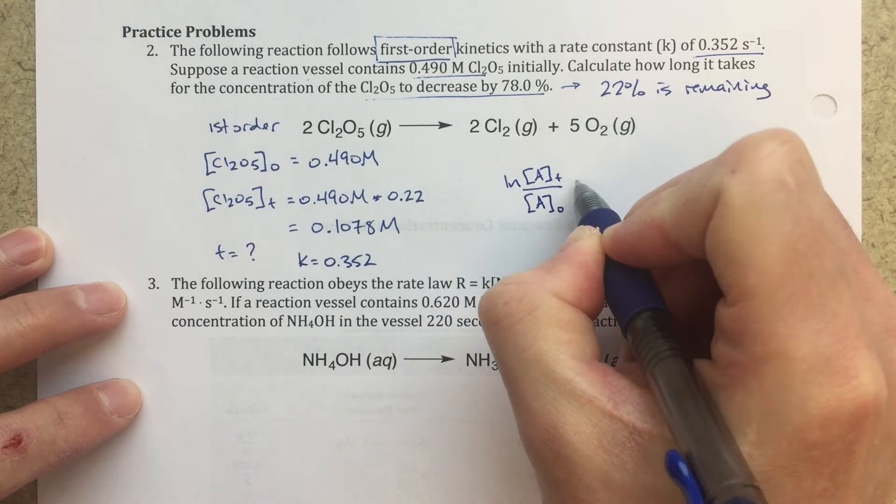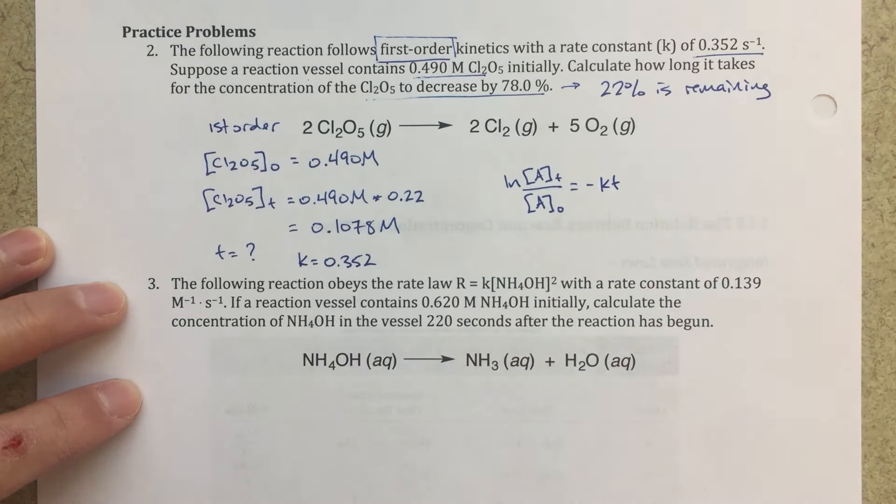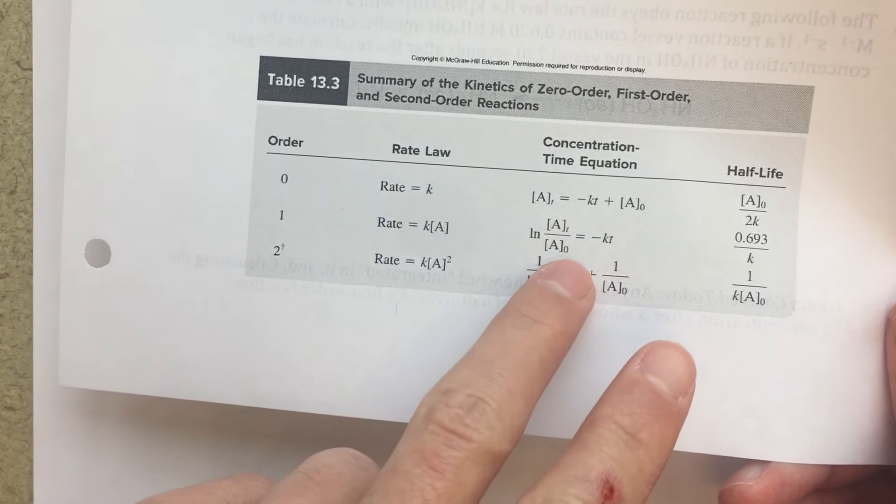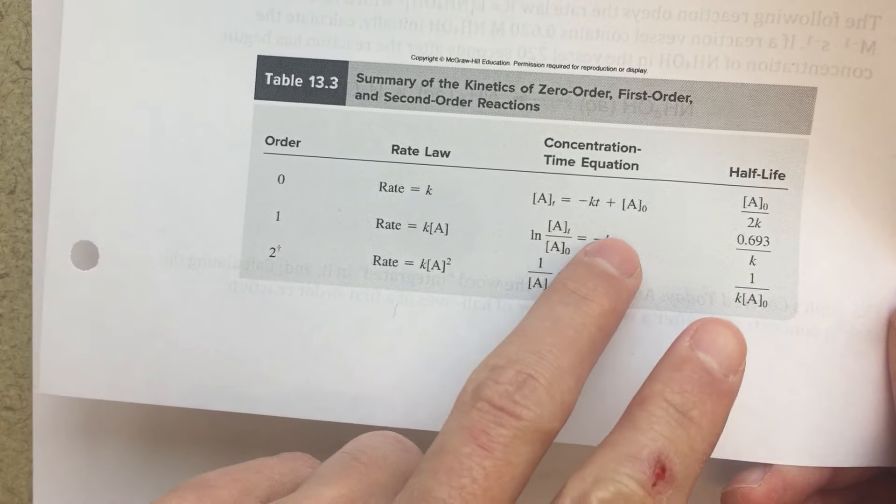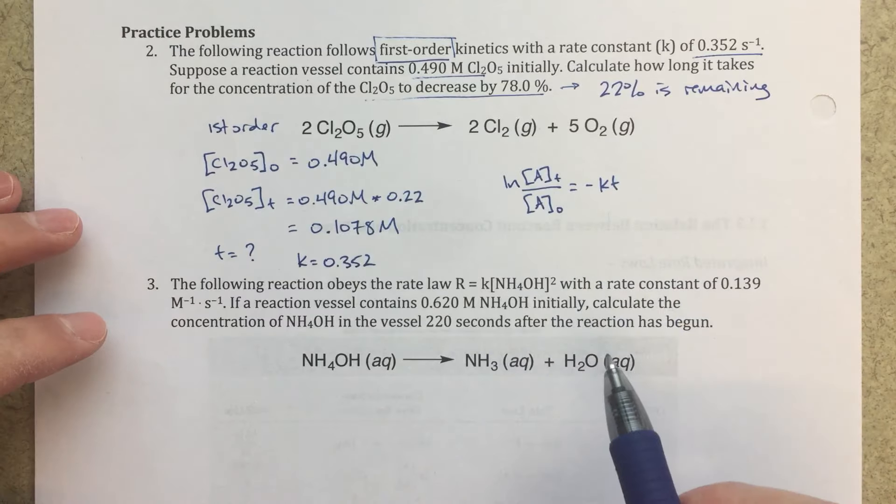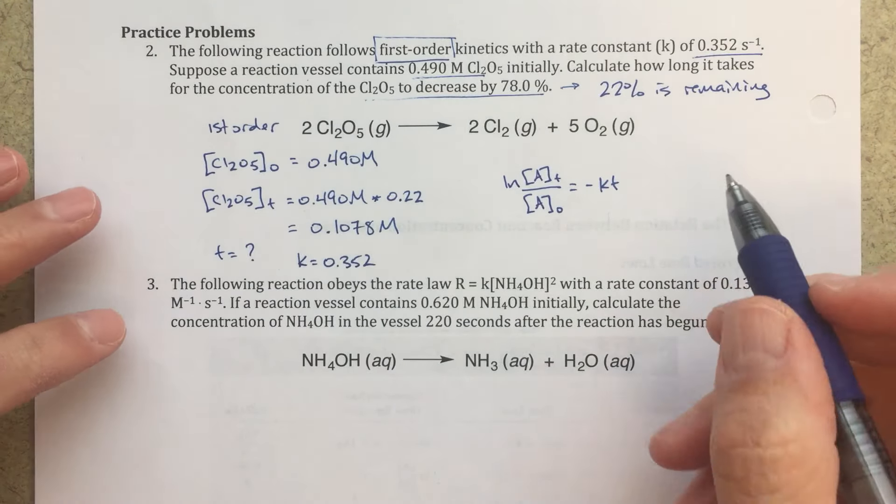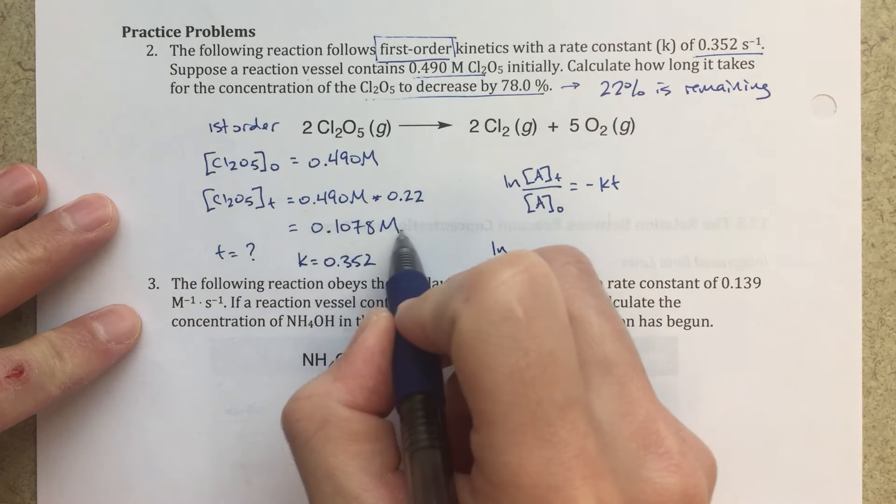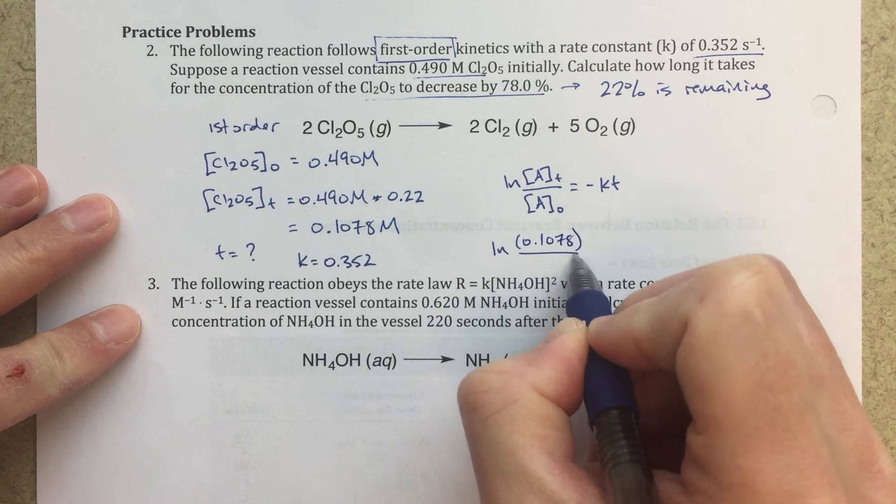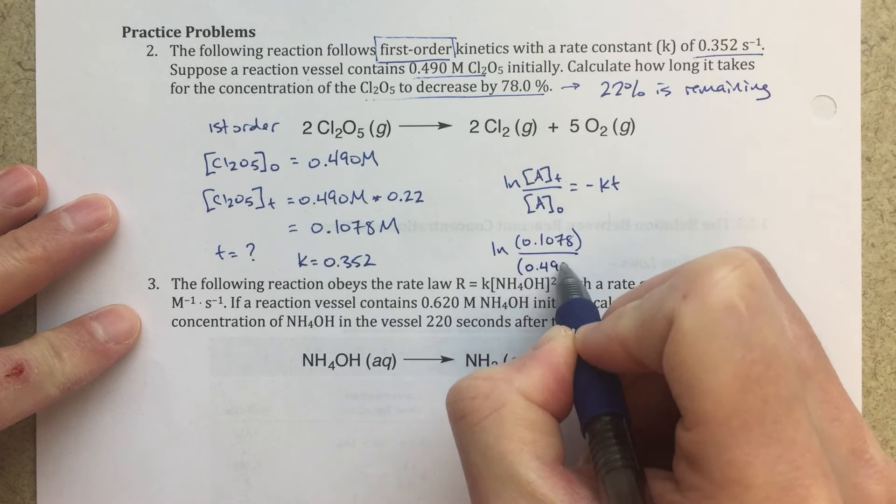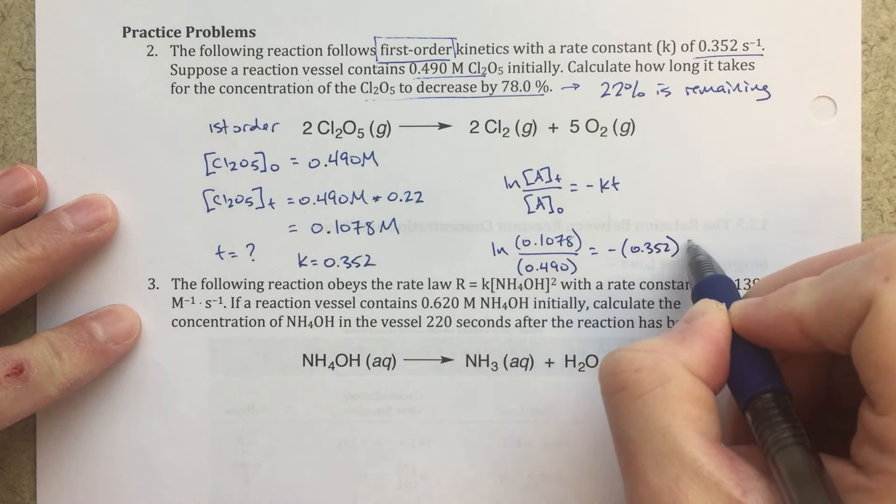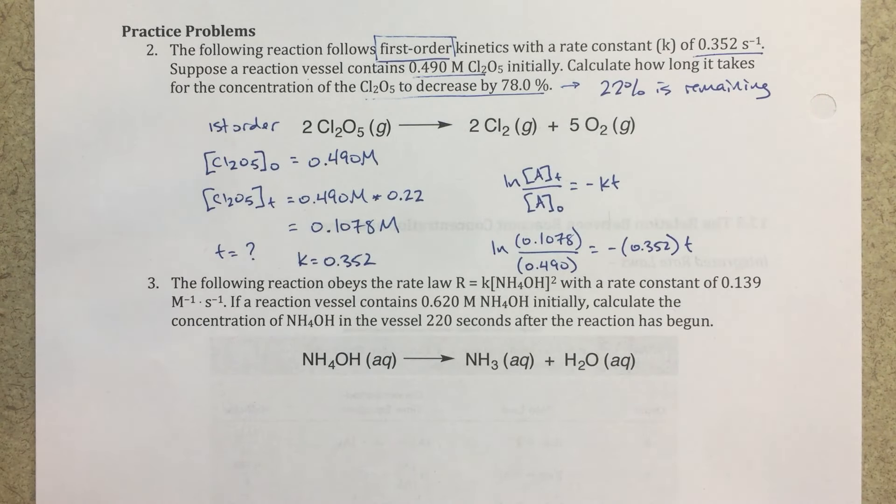So let's write out that integrated rate law. I'm choosing the integrated rate law for the first order reaction. So going back to my table, for a first order reaction, this is the integrated rate law. This is going to correlate my concentrations to my rate constant and my time. So that's the one that I've reproduced right here. And now all it is is just plugging in the relevant information. So if I plug in my concentration at time T, that's going to be this value here, 0.1078. My concentration initially is 0.490 equals minus K, which is 0.352 times T. And now I can just solve for T, and that's really it.